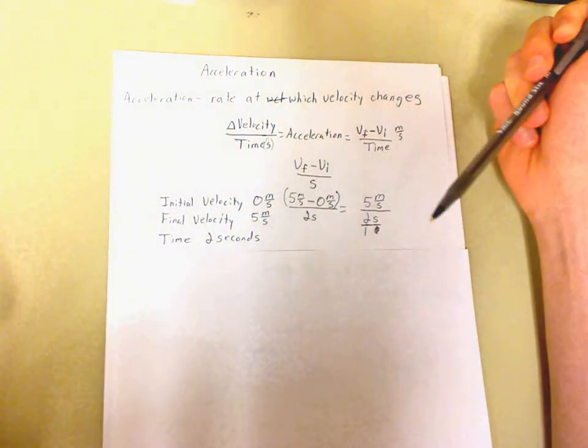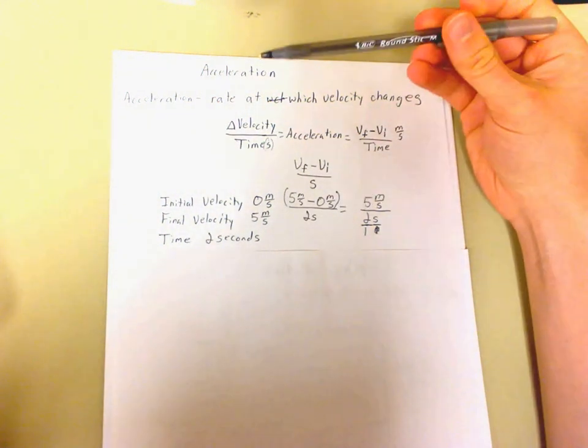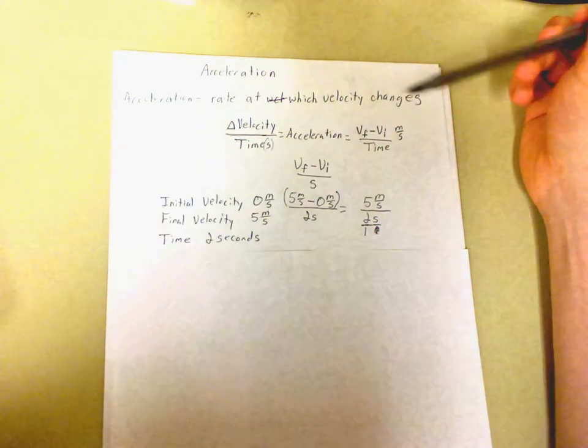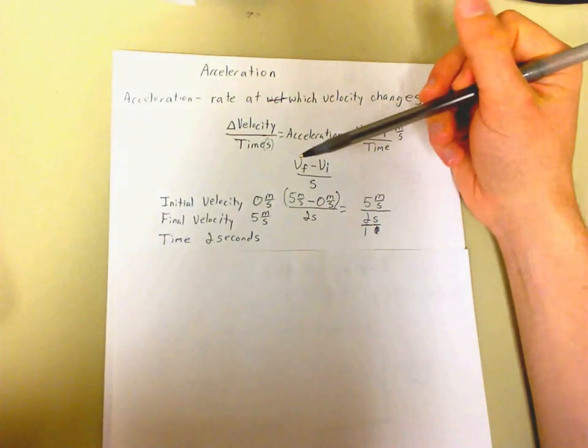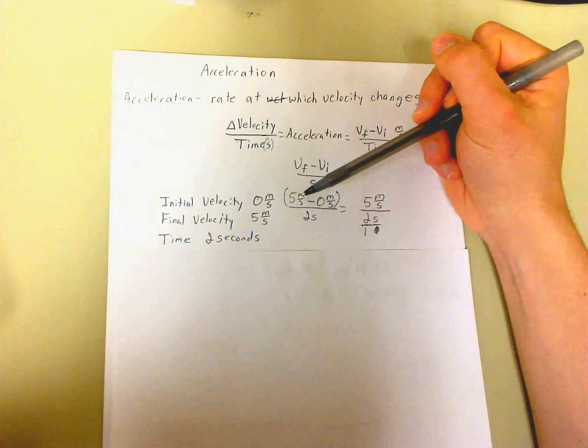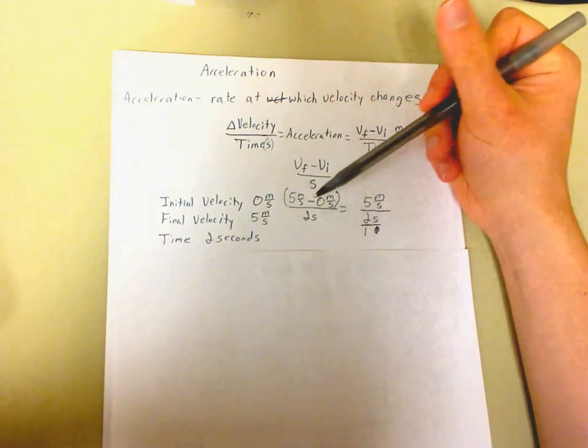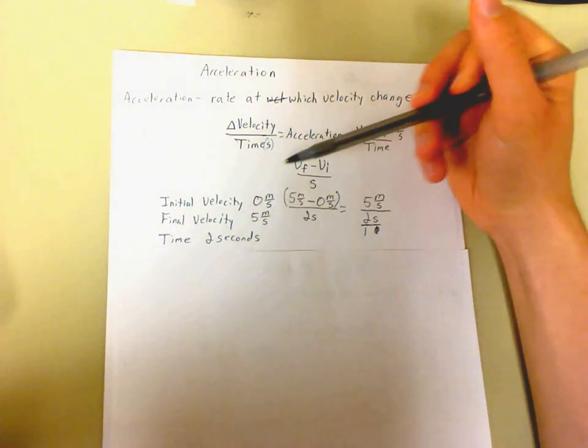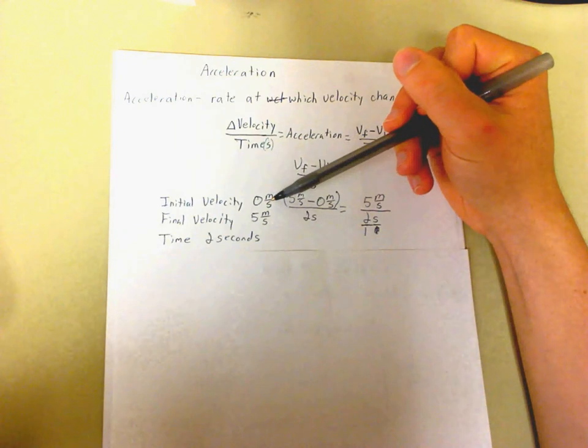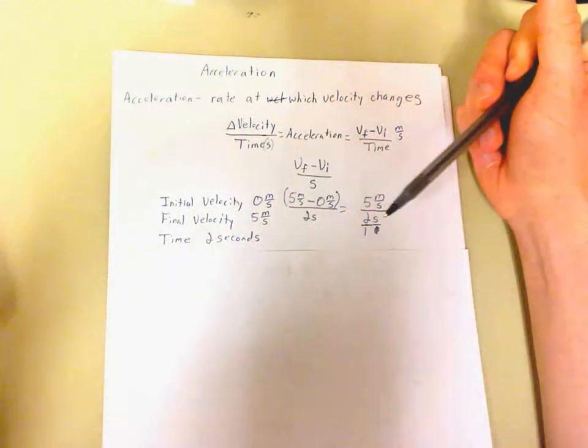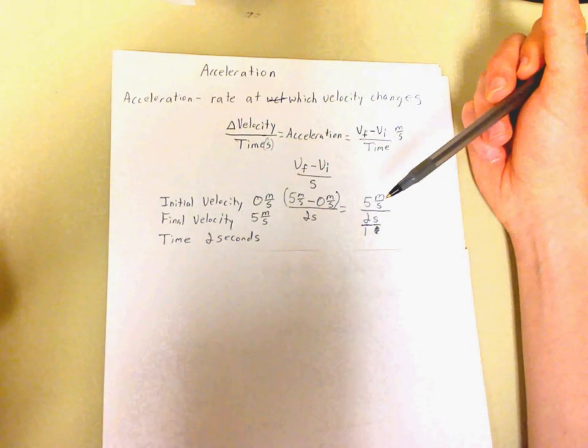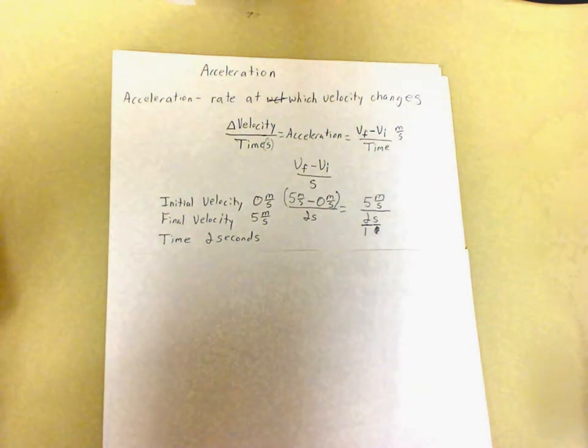So we have all of the keys that we need to find the rate at which velocity changes. We have our final velocity, which is 5 meters per second. We subtract that by 0 because that was our initial velocity. And then we're dividing that by 2 seconds because that is the time that it took for us to actually reach 5 meters per second.